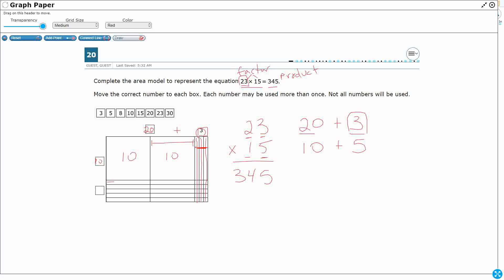And how many rows do we have? One, two, three, four, five. There's your 10 plus five.